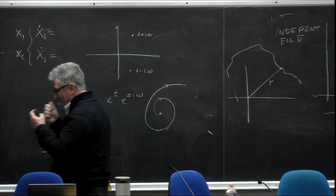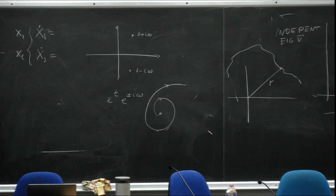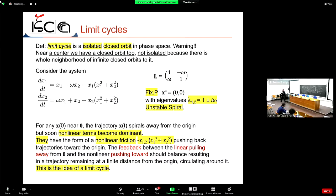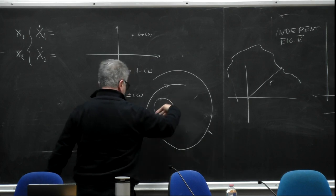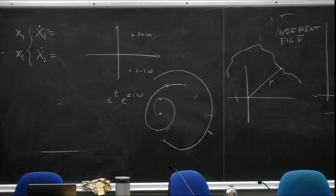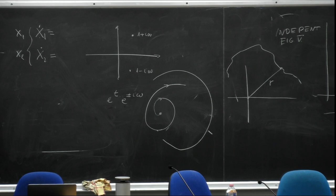At this point the nonlinear terms enter the game. The nonlinear terms are able to stop this spiraling behavior and reinject the trajectory back toward the origin. You have competition between the instability due to the spiral and the nonlinear pushing back toward the origin. The balance between these two effects gives rise to the limit cycle.